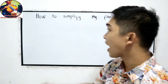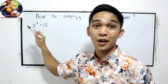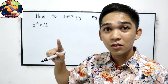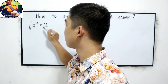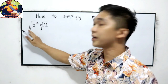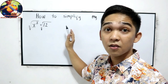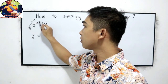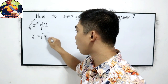How to simplify if the given is x squared is equal to 12. One of our viewers asked this question. We know that we need to eliminate the square, so to eliminate the square we need to extract the square root of both sides of the equation. It will become x, because square root and square cancel out, and the remaining expression on the right side is square root of 12.